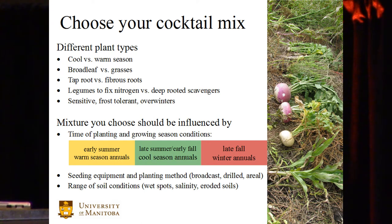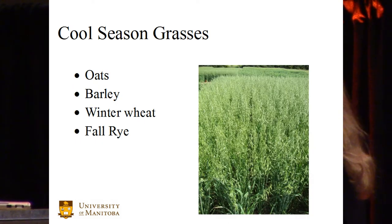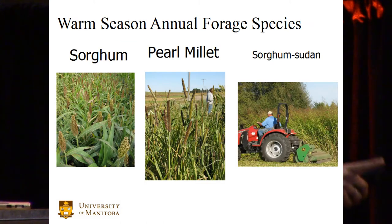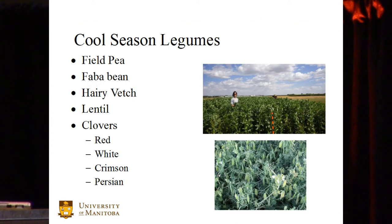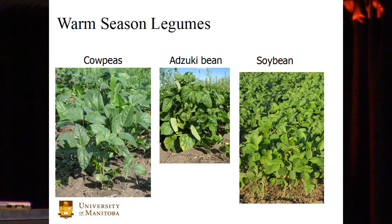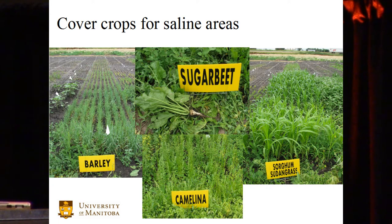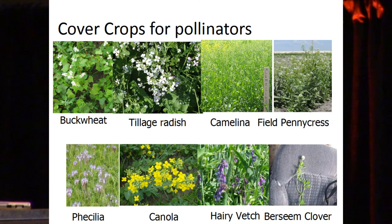So this is a nice framework, but how do we get from thinking about this framework to picking species? I'd like to spend some time practicing with you today. I've got a bunch of slides I'm going to skip through that illustrate different species — cool season species, warm season species, cool season legumes, warm season legumes, those large tap-rooted species, things more tolerant to salinity, and things that are good for pollinators.